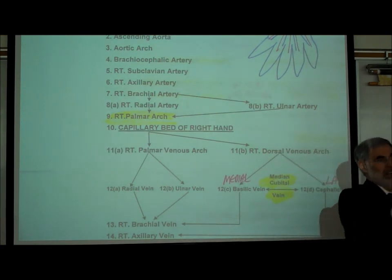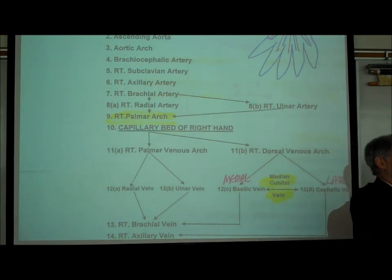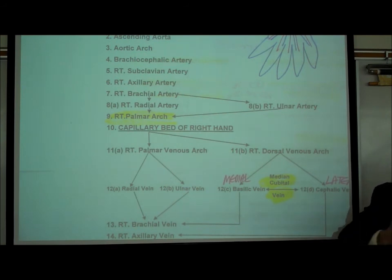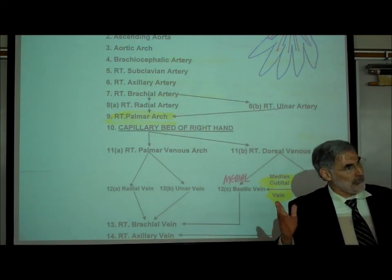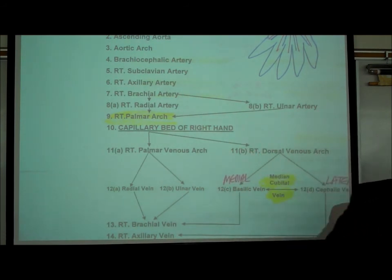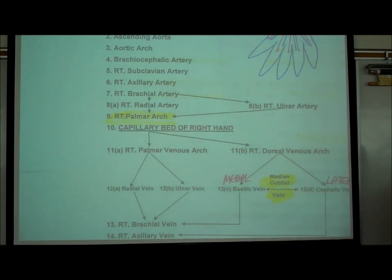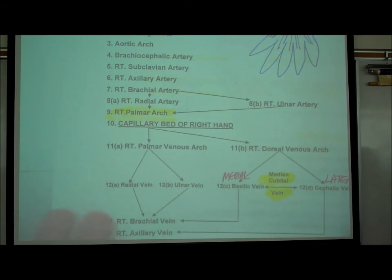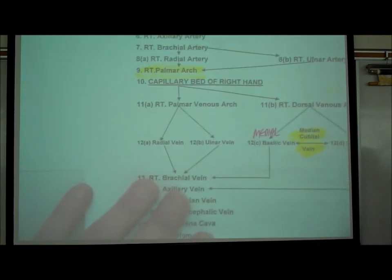Once you've gone where you wanted to go on the surface streets, you get back onto the freeway — which is a vein — and go in the reverse direction. So we've made it to the capillary bed of the right hand.